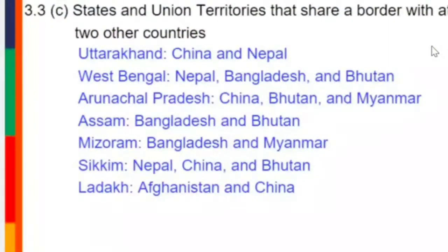The next question: states and union territories that share a border with two other countries. In West Bengal: Nepal and Bangladesh. In Arunachal Pradesh: China, Bhutan, and Myanmar. In Assam: Bangladesh and Bhutan. In Mizoram: Bangladesh and Myanmar. In Sikkim: Nepal, China, and Bhutan. These states all share borders with more than one foreign country.